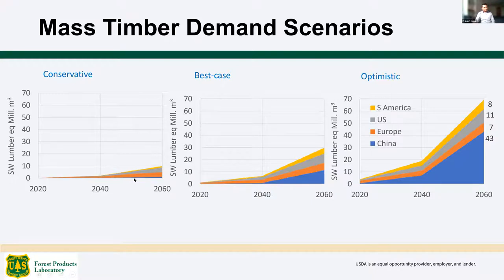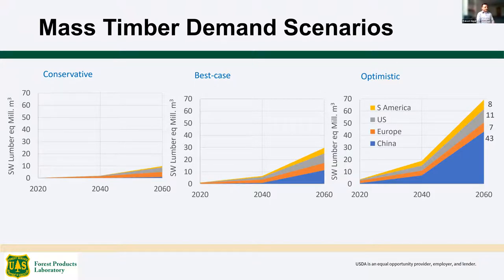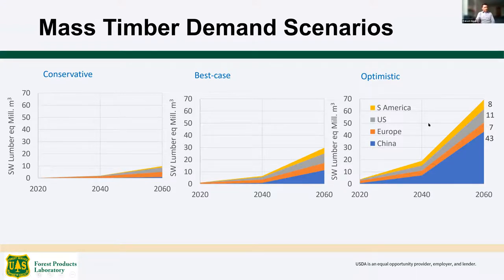The time frame is 60 years — we want to see long-term impact because the forest sector involves long investments and it may take time for the forest industry to adapt, so we simulate to 2060. In the conservative scenario, we project about 10 million cubic meters of softwood lumber equivalent demand; in the best case, about 30 million; and in the extreme optimistic scenario, about 70 million cubic meters by 2060. Most of those increases are coming from China based on our market diffusion modeling, because China is a huge country with massive construction activity.